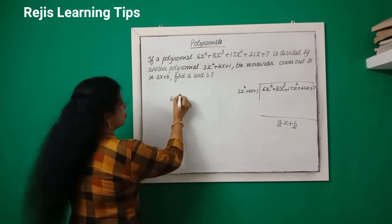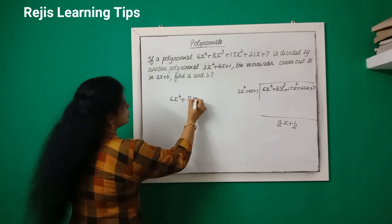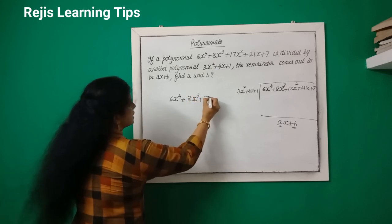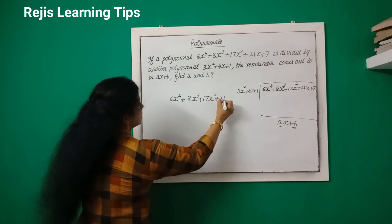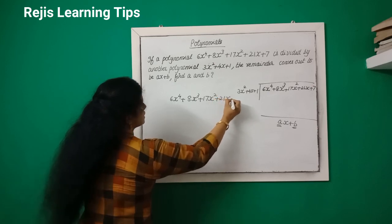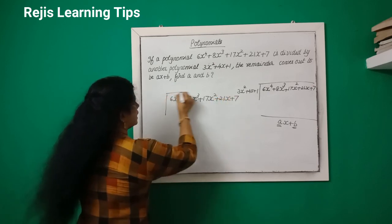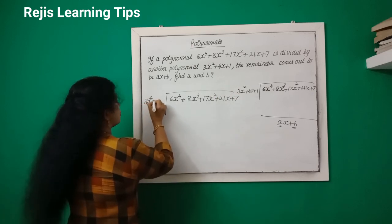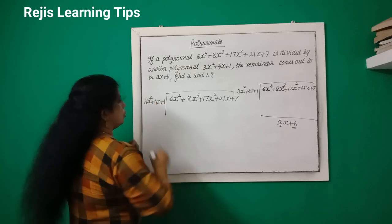We have 6x⁴ + 8x³ + 17x² + 21x + 7 divided by 3x² + 4x + 1.